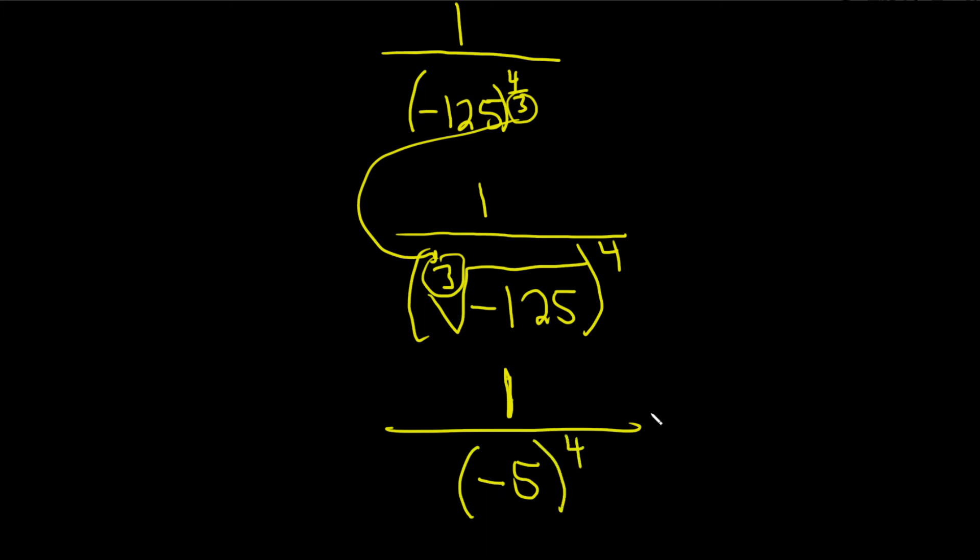And then five to the fourth power is 625. Because this is even, it's going to get rid of the negative. So one over 65. And that would be the final answer. Good luck.